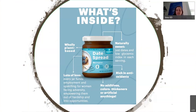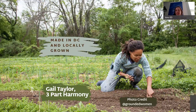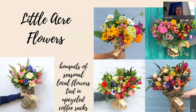Deferro Date Spread is a plant-based spread made with just dates and, in some cases, cacao, and every jar funds employment and upskilling for women facing adversity or experiencing homelessness. Three-Part Harmony Farm, a Made in DC business, focuses on growing food locally, addressing food access, and sustainable farming in the district. Little Acre Flowers sources flowers locally, providing bouquets of seasonal flowers hand-tied in upcycled coffee sacks that would otherwise be thrown away.